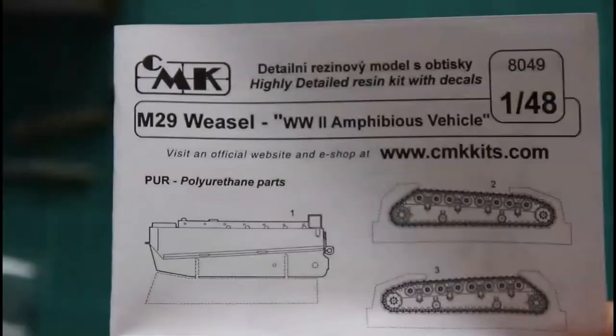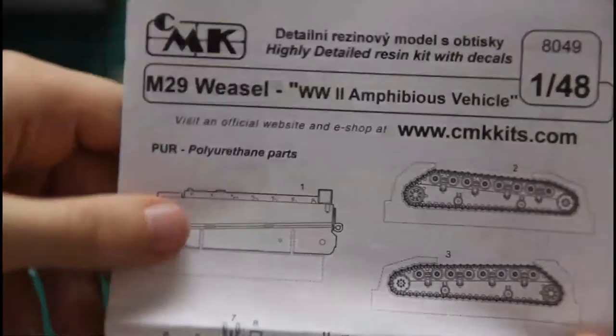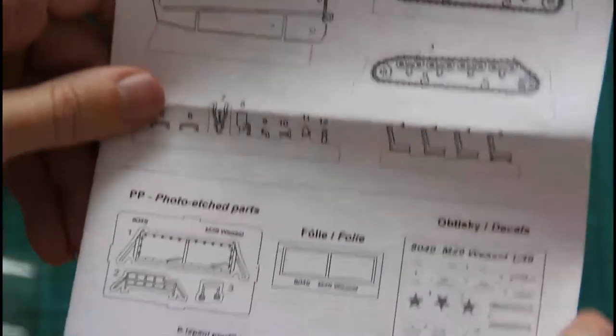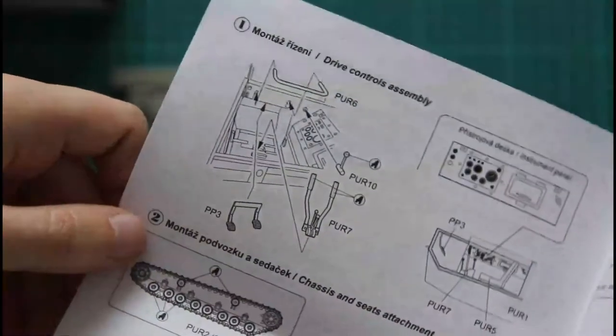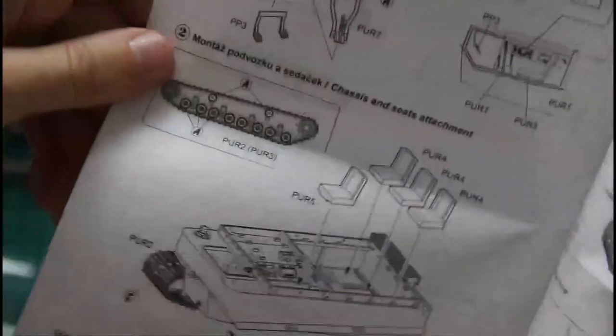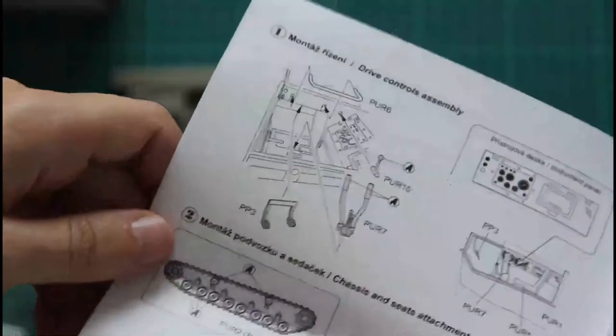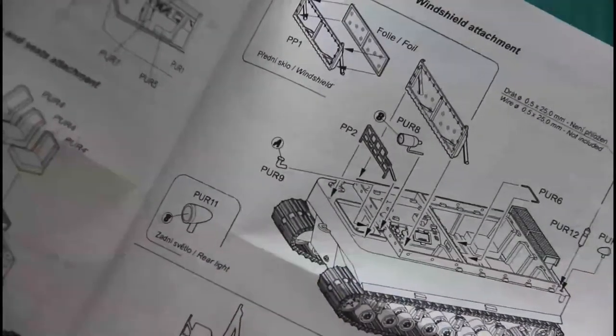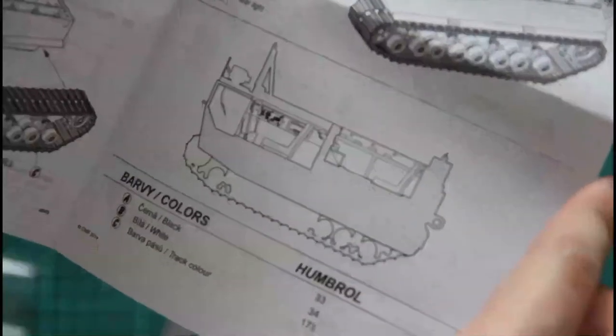Then we have the assembly manual. The assembly manual is quite simple. I will zoom it out a bit. Now you see it. We have on the front page, on the first page, just a parts map. And here are assembly instructions. As you can see, the cockpit will be pretty much detailed, and some internal parts will have some detalization.